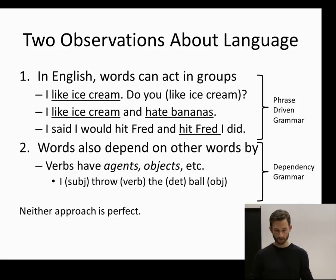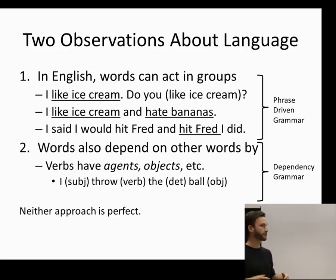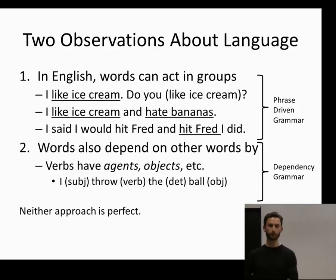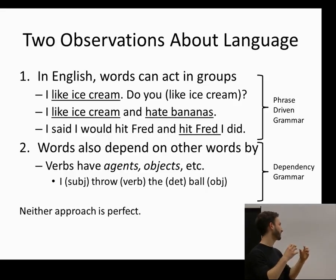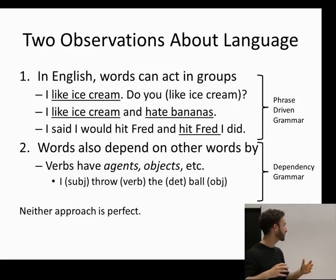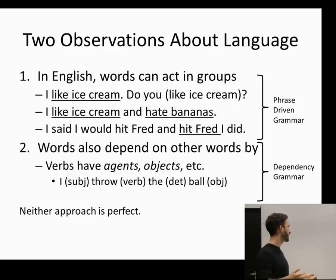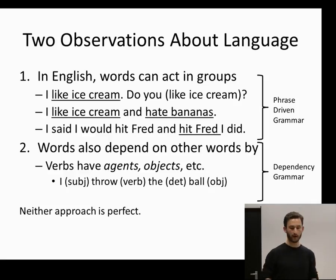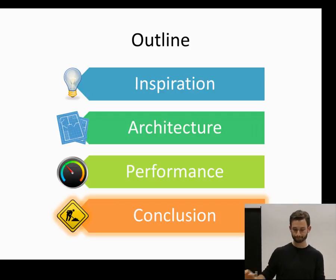Two observations about language before concluding. In English, things tend to move in groups: 'I like ice cream, do you?' — you don't need to repeat 'like ice cream.' This observation motivates phrase-driven grammar, which tries to group things together, as opposed to dependency grammar, which identifies head-dependent relationships. Both are supported by observations in language and neither is perfect. OLLI uses a dependency parser; other approaches like Clausie use phrase-driven grammar.